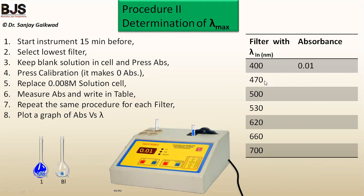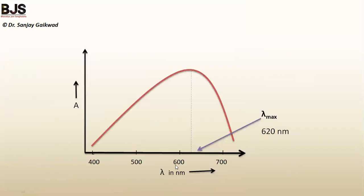Repeat the same procedure for each filter: select the next filter (470 nm, 500 nm, etc.), re-zero with the blank using calibration, then replace with the highest concentrated solution and record the absorbance. After measuring absorbance at all wavelengths, plot a graph of wavelength (lambda) versus absorbance. The highest peak on this graph gives lambda max — for copper sulfate ammonia complex, lambda max is 620 nm, meaning this wavelength is absorbed most by the solution.